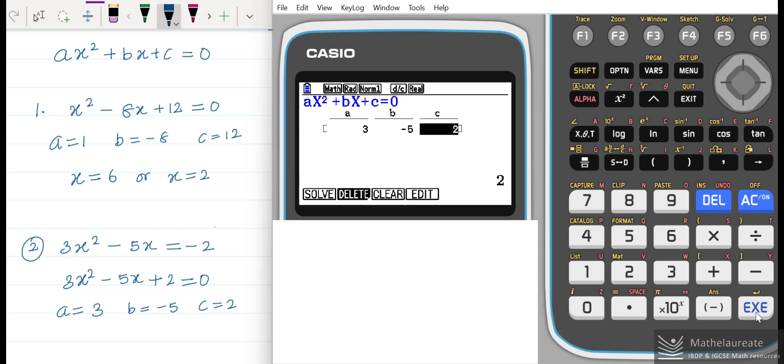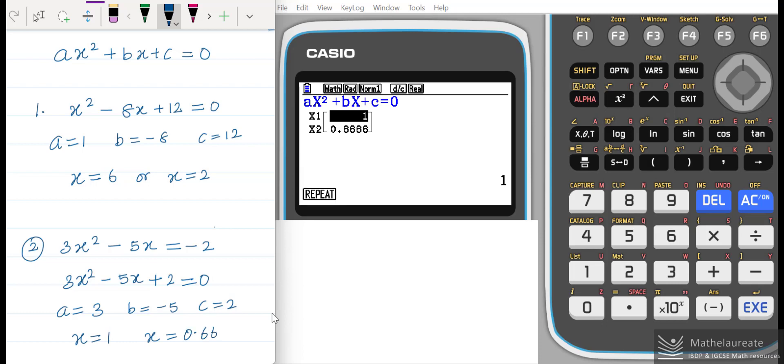After entering all these values, press solve here by using F1 or just press execute. It gives you the values: x equal to 1 and the second root is x equal to 0.666. If you want to round off to three significant figures, 0.67.